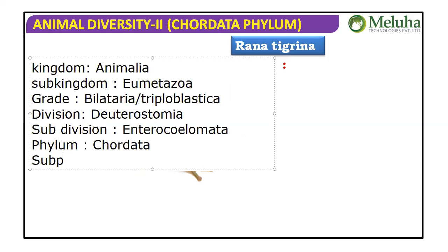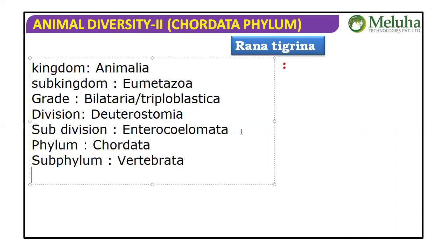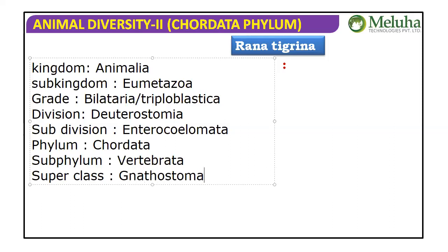The Subphylum — you have three options: Urochordata, Cephalochordata, and Vertebrata. We select Vertebrata. The Superclass is Gnathostomata; between the two options of Agnatha and Gnathostomata, we select Gnathostomata.